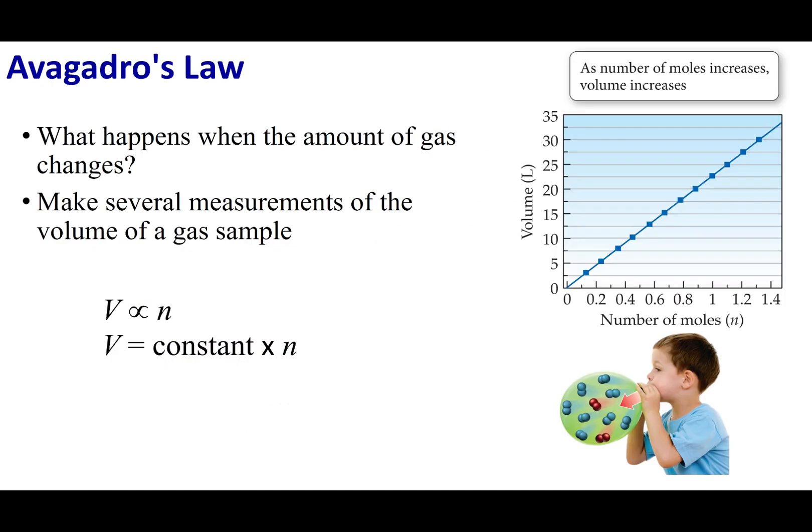Let's talk about the last old-timey chemist, our favorite one: Avogadro. Avogadro was looking at volume and the number of moles. We can use a child filling up a balloon for our example. If a child is blowing more gas particles into a balloon, as we increase the number of moles, the balloon gets bigger or the volume gets bigger. Volume and the number of moles are directly proportional. When one goes up, the other goes up. I could write this as volume equals a constant times the number of moles.